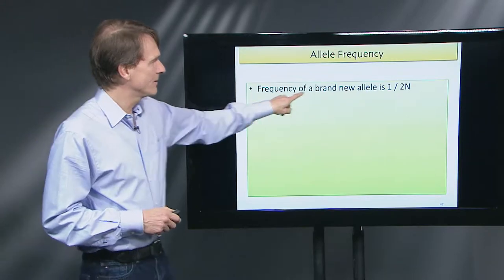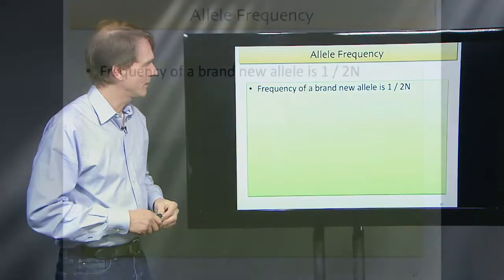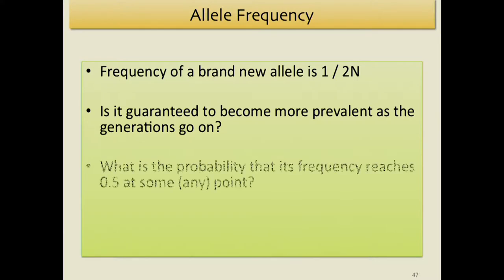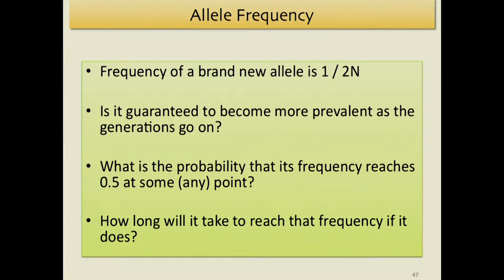The frequency of a brand new allele is 1 over 2N. Key questions: Is it guaranteed to become more prevalent as generations go on? What is the probability that its frequency reaches some threshold — say 0.5? How long will it take? These questions, when answered, give us a sense of how our variation arose over the generations.